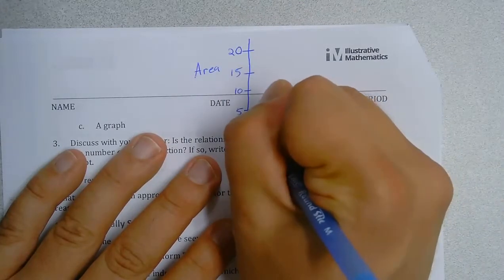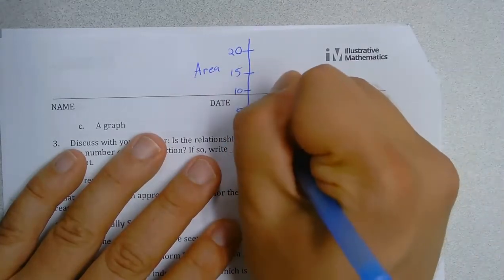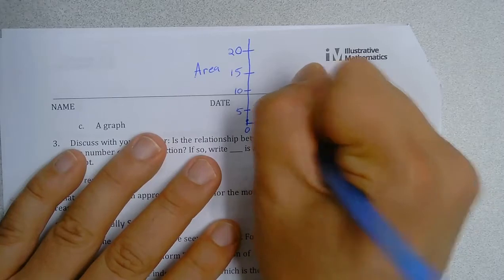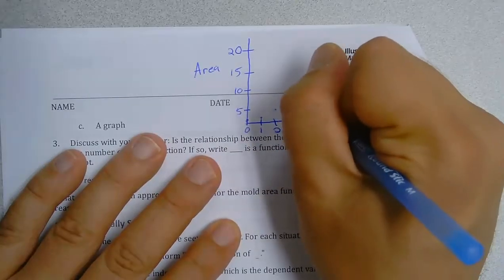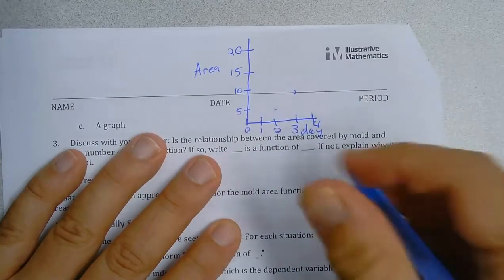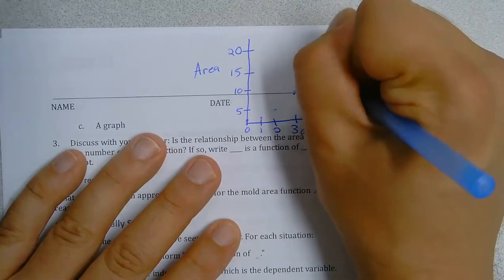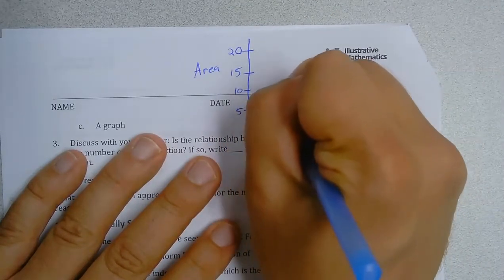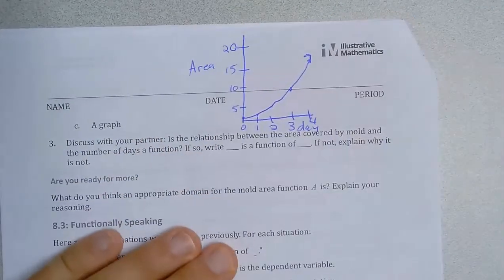So day zero we had one. Day one it was two. Day two we're at four. Day three that doubles to eight. And then eight times two for day four is 16. And we have our exponential growth curve.